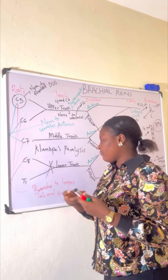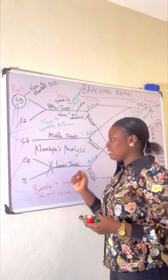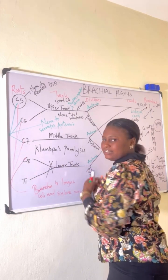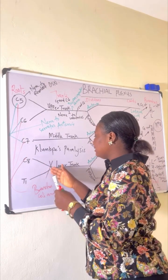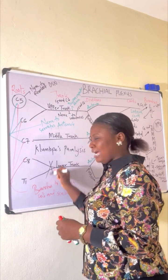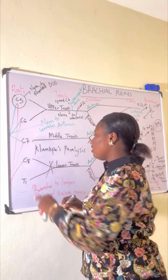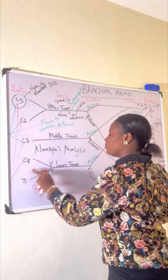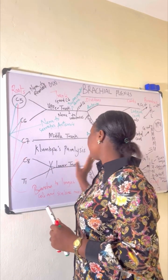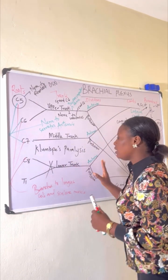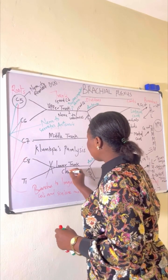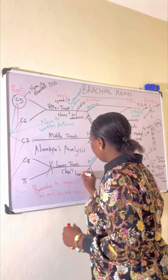The C8 and T1 form the lower trunk. When the lower trunk is affected, C8 and T1 — which are involved with sensation in that area — are going to be affected as well. As a result, this will give rise to what is called the claw hand.